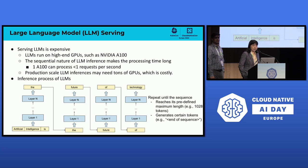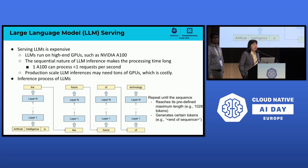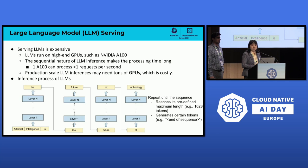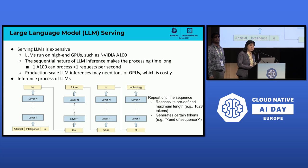However, serving large language models is very expensive. First, it needs to run on high-end GPU accelerators such as A100 or even H100, and the sequential nature of large language models makes the inference processing time very long. For one A100 accelerator, if you want to process a request, it's less than one request per second. So for production use cases you may need tons of inference requests going through, which will require tons of GPUs — apparently very costly.